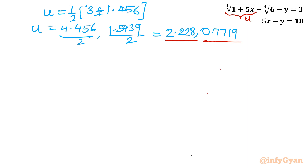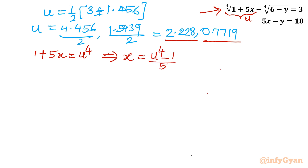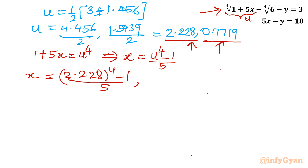Our u was defined as the fourth root of (1 + 5x), so 1 + 5x equals u⁴, meaning x equals (u⁴ - 1) / 5. For u ≈ 2.228: x equals (2.228⁴ - 1) / 5. For u ≈ 0.7719: x equals (0.7719⁴ - 1) / 5. This gives us two x values.